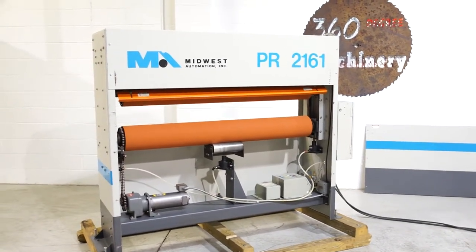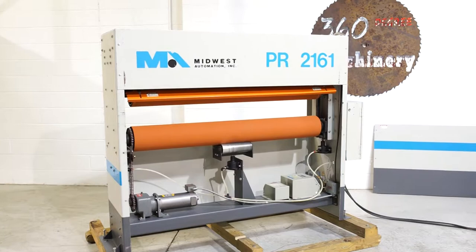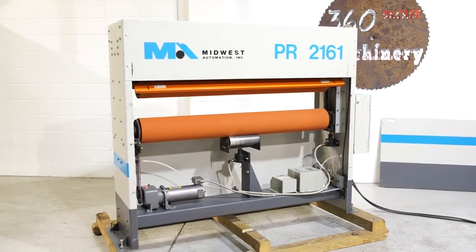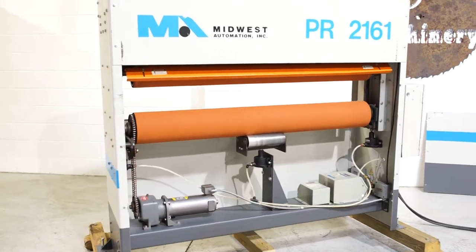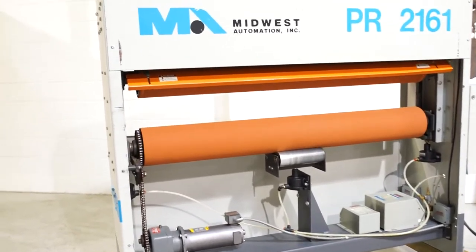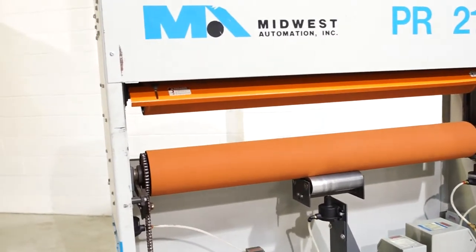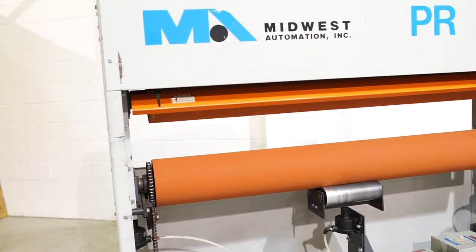This is a Midwest Automation PR2161 60-inch pinch roller. It has all the desirable features that you would be looking for. First of all, the actual width of those rollers is 60 inches. Those rolls are 7.5 inches in diameter.